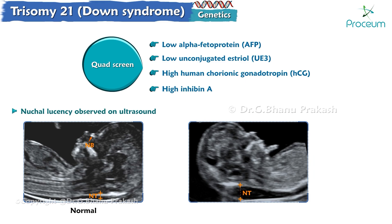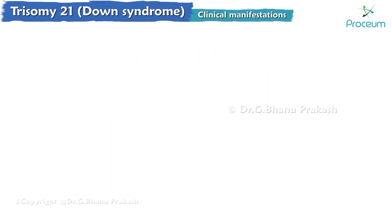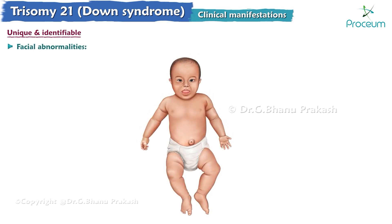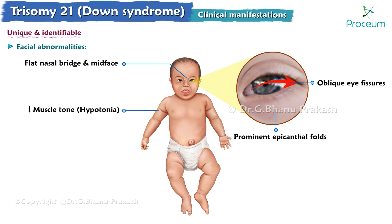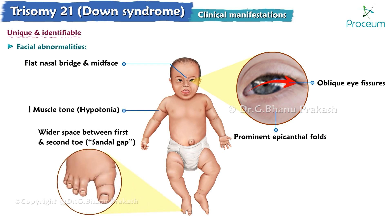Physical findings of Down syndrome include unique, identifiable facial abnormalities: prominent epicanthal folds, oblique eye fissures, flat nasal bridge, and mid-face hypoplasia. There is decreased muscle tone (hypotonia) and a wider space between the first and second toe, known as the sandal gap.